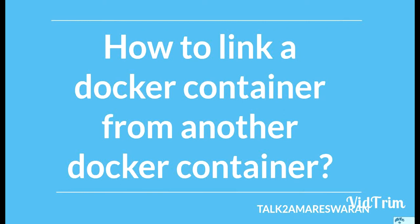Hi everyone, today we are going to see how to link a Docker container from another Docker container. In this demo I am going to show you two microservices developed using Spring Boot. Those two microservices are the order service and the tracking service. Once the order is placed, we need to send the tracking ID to whoever is calling that API. Those two microservices are already running in my local machine.